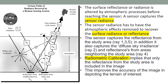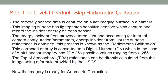This improves the accuracy of the image in depicting the terrain of interest. The remotely sensed data is captured on a flat imaging surface in the satellite or aerial sensor, and this imaging surface has photon-sensitive sensors, which capture and record the incident energy on each sensor. Accounting for stray and scattered light and internal camera configuration, design, parameters, and components, the energy incident just from the surface reflectance is obtained upon radiometric correction or calibration.